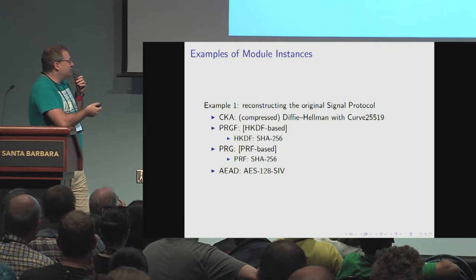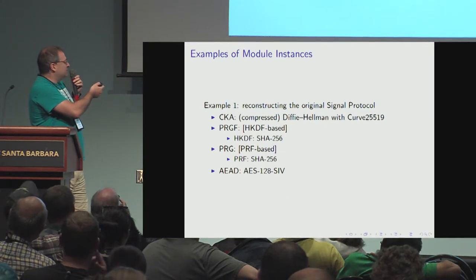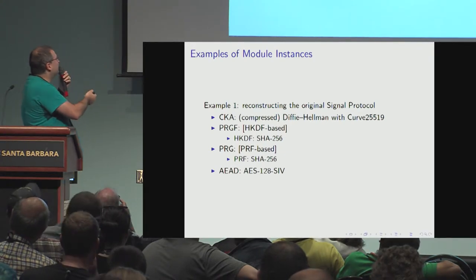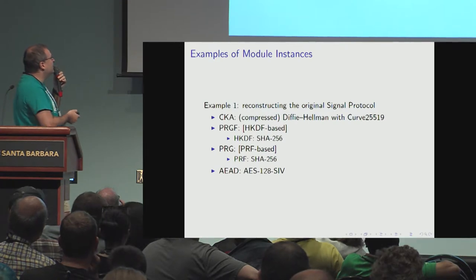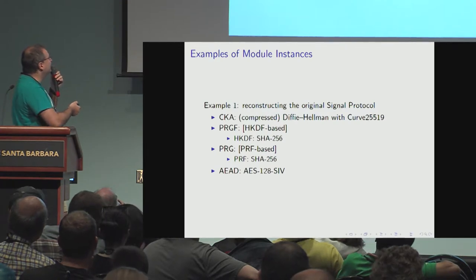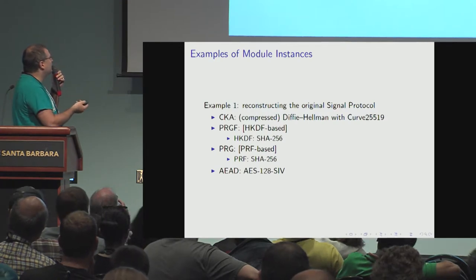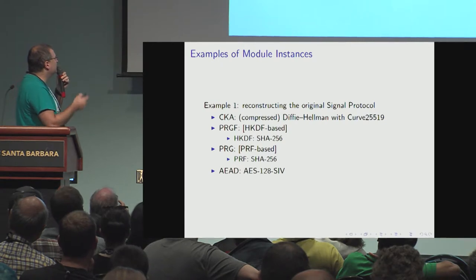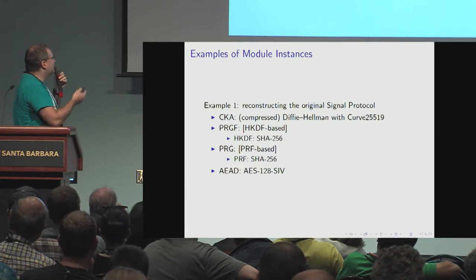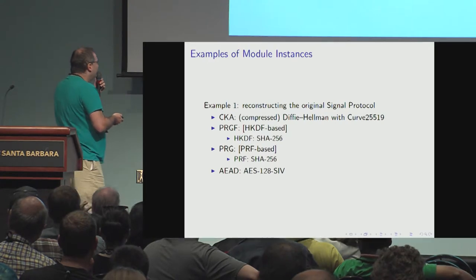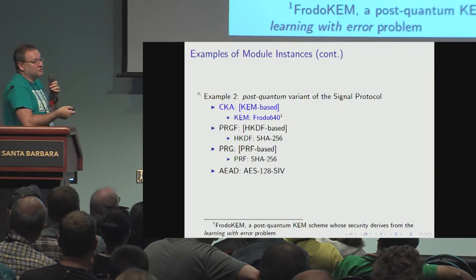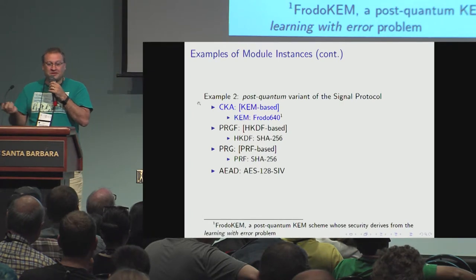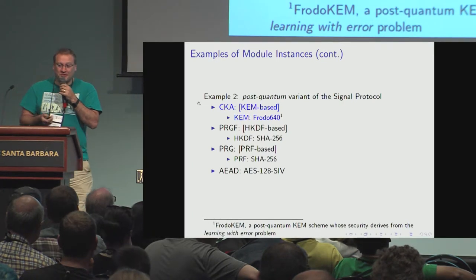To give an example: the original Signal is a special case where the CKA comes from compressed Diffie-Hellman key agreement, the hash function is HKDF-based, the PRG is based on SHA-256, and you use AES-128 CTR. Then, just to play around, we wanted to do a post-quantum implementation of Signal — just going for it as a master project.